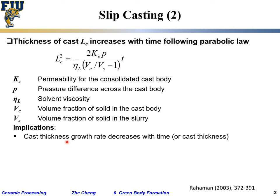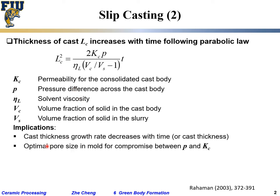The thickness growth rate decreases with time. You can verify this by differentiation, or by recognizing the parabolic diffusion analogy: the longer the time, the slower the apparent growth rate — just like diffusion. You also need an optimal pore size.